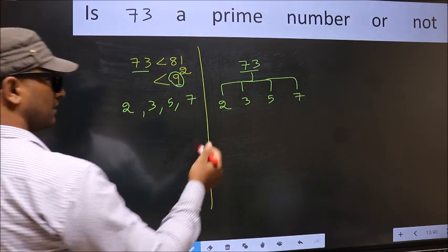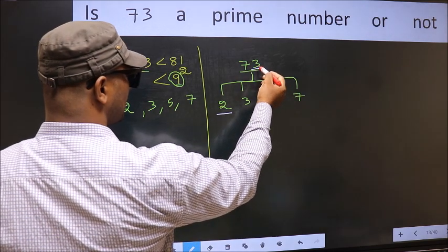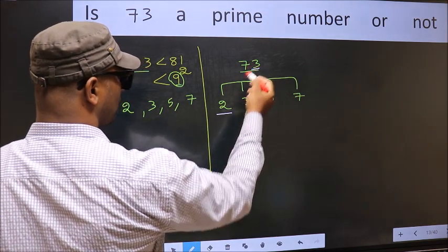Starting with 2. Last digit is 3, not even. So this is not divisible by 2.